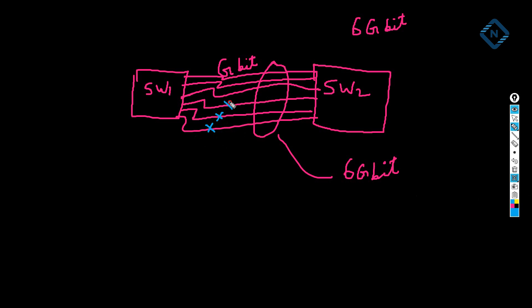Spanning tree protocol will disable the redundant ports and only one port will be working. Spanning tree protocol is a Layer 2 protocol which disables links that create loops in the network. We already know that. Here we have two switches connected with links — our interface is gigabit supporting 1 GB — but we need 6 GB. So instead of changing the hardware, we think of connecting six links to get 6 GB speed.